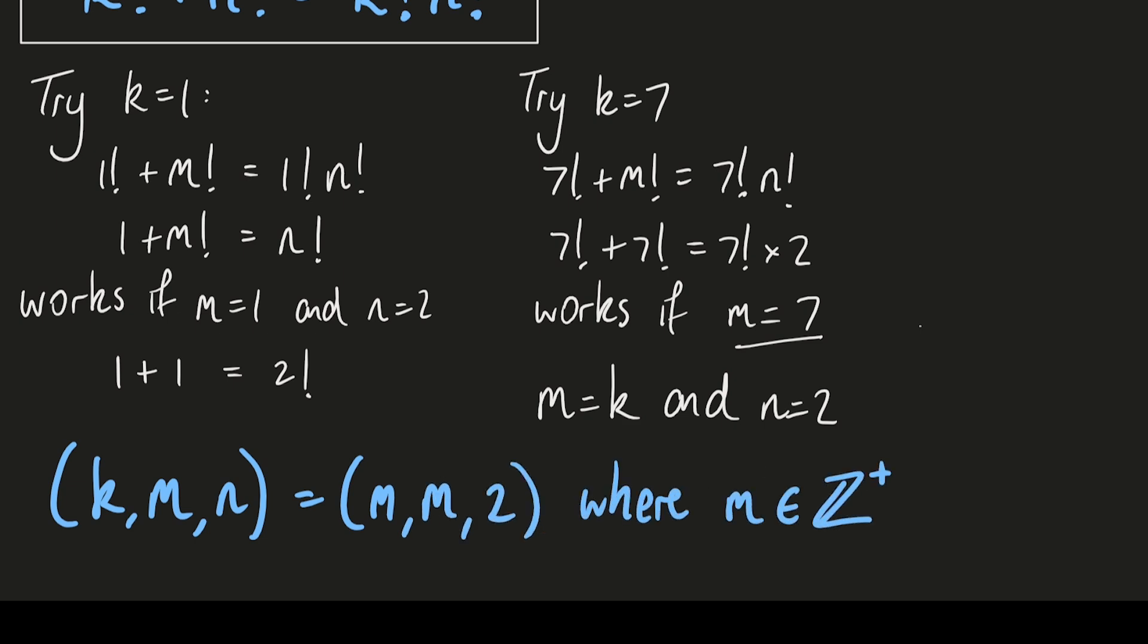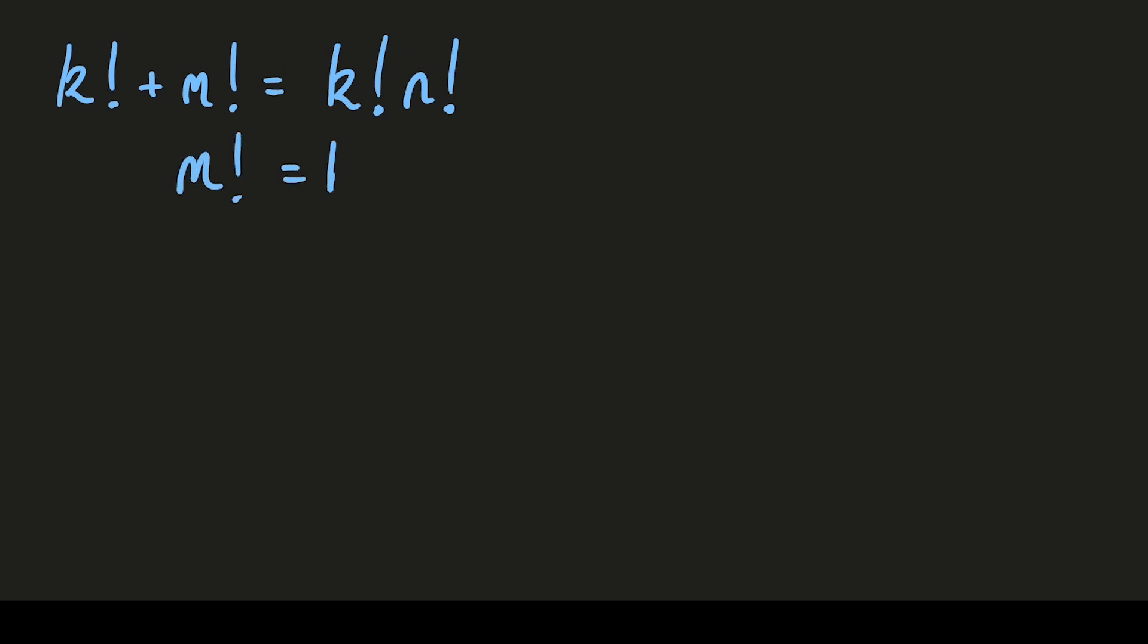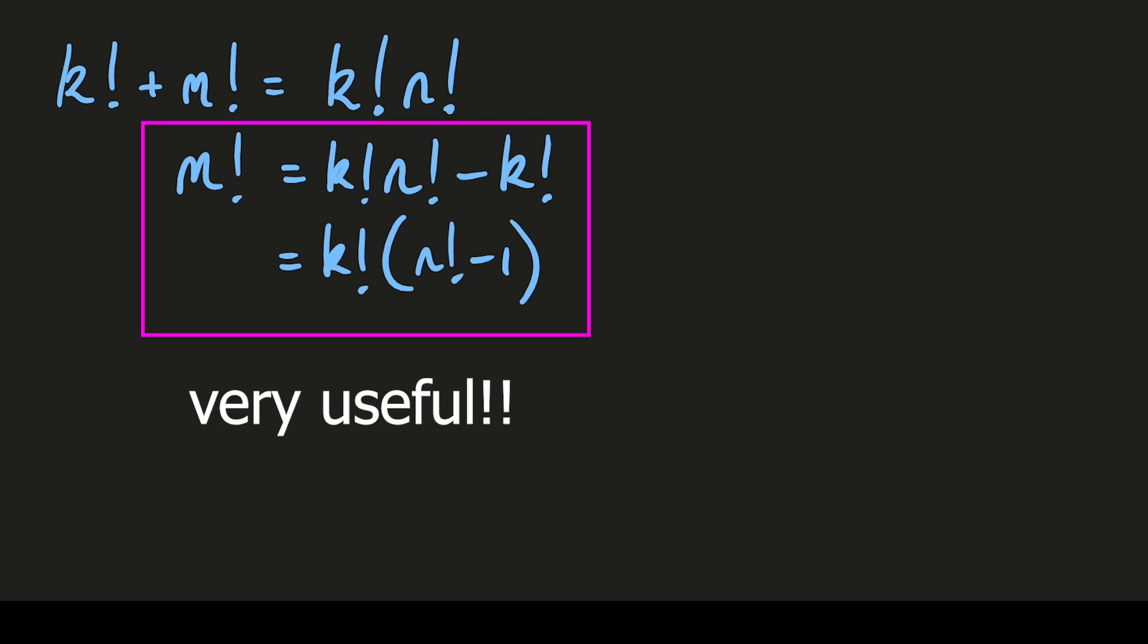But you might have guessed that these are not the only solutions. To find the others it's time for some algebra. If we move the k factorial onto the right hand side we can factorize the equation. The right hand side becomes k factorial times n factorial minus 1. And this form of the equation is actually very useful.